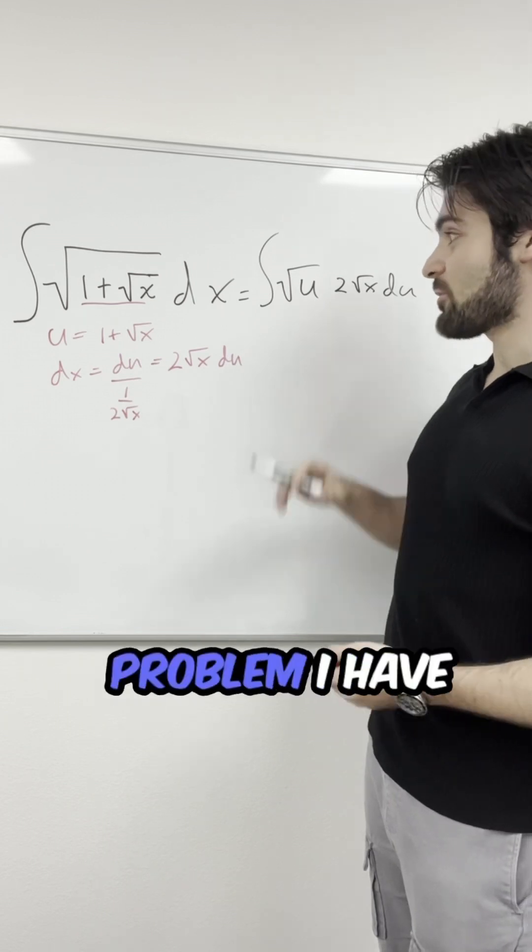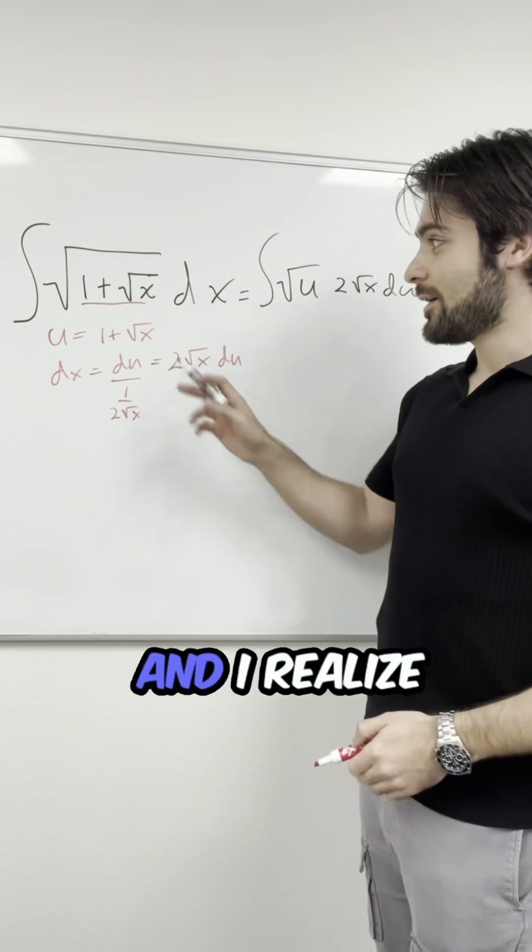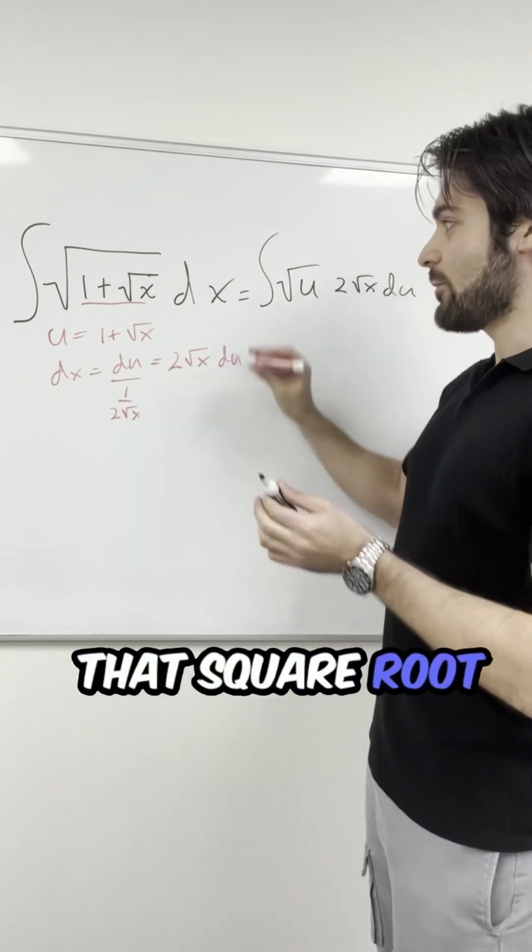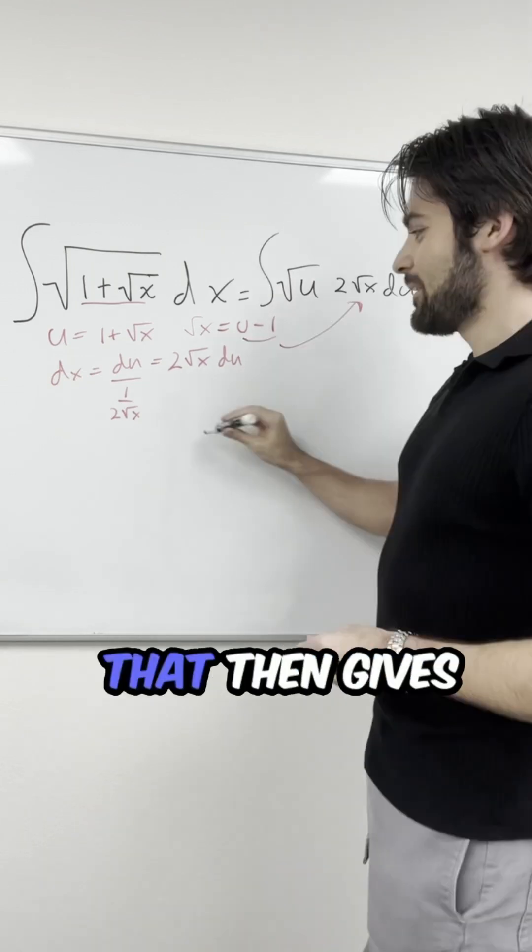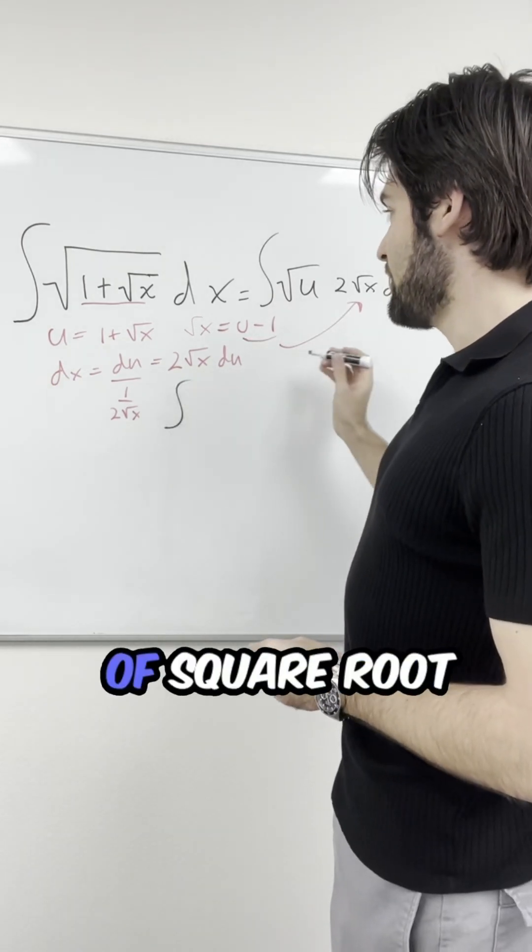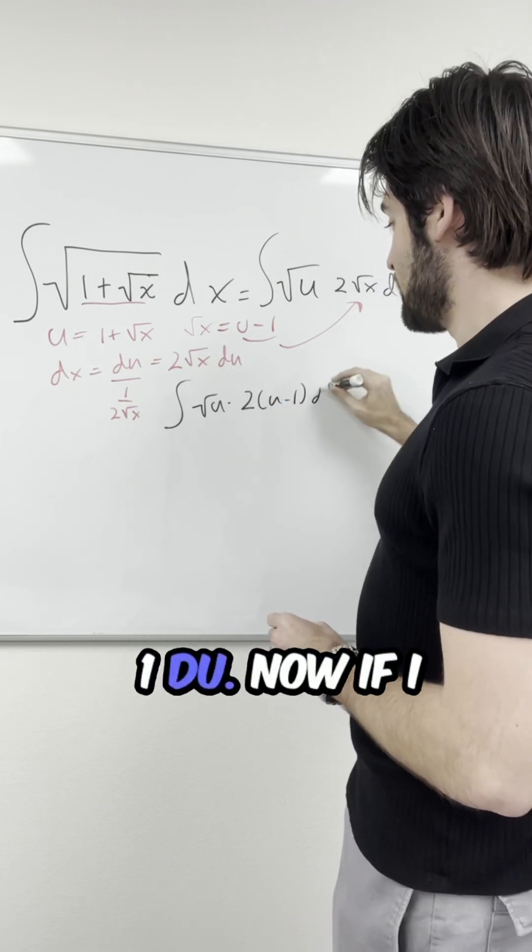So in order to fix this problem, I have to use my original substitution expression, and I realize that square root of x must be equal to u minus 1. That then gives me the integral of square root of u times 2 times u minus 1 du.